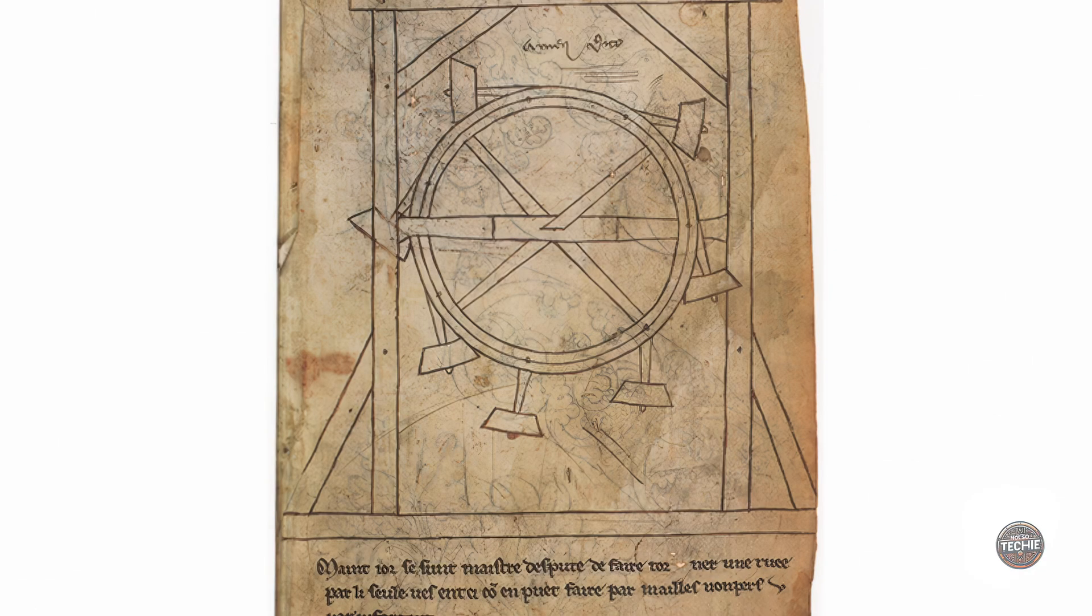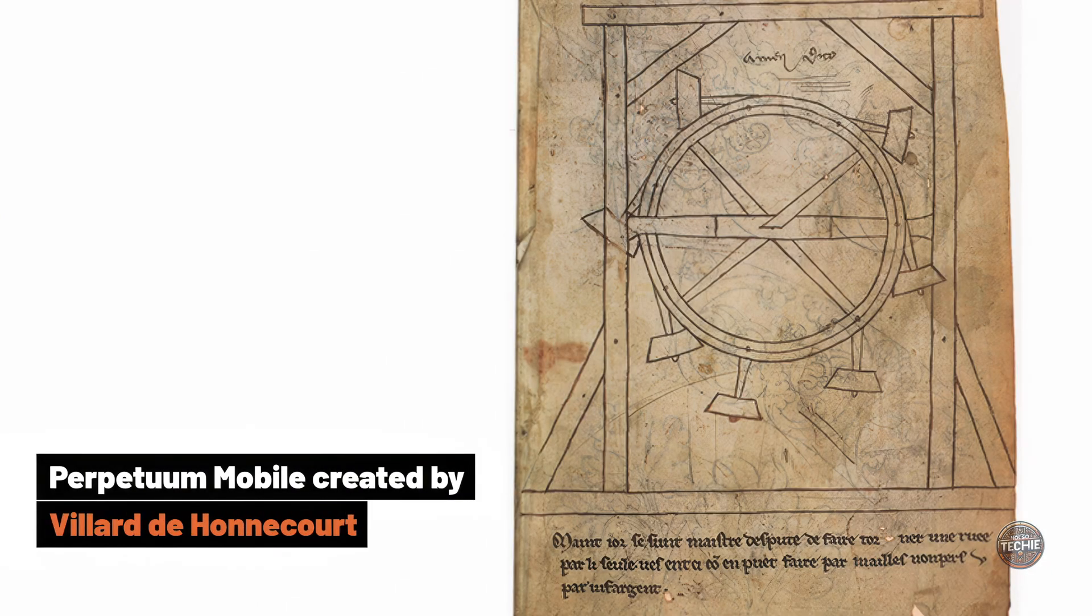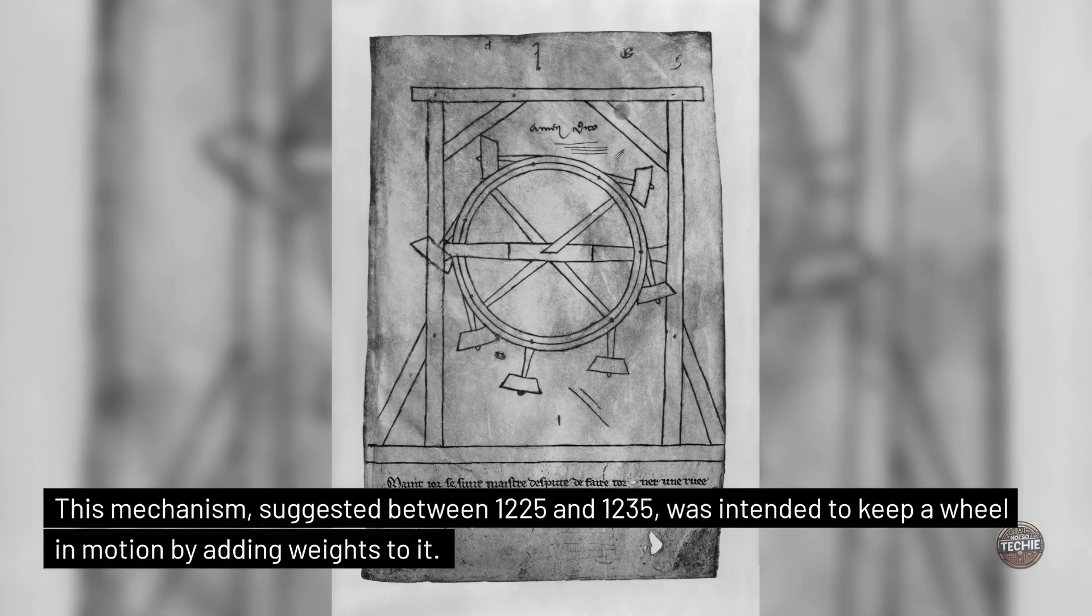Another early example of such a device is the Perpetual Mobile, created by Villard de Honnecourt. This mechanism, suggested between 1225 and 1235, was intended to keep a wheel in motion by adding weights to it.